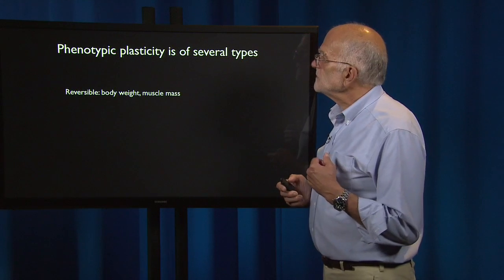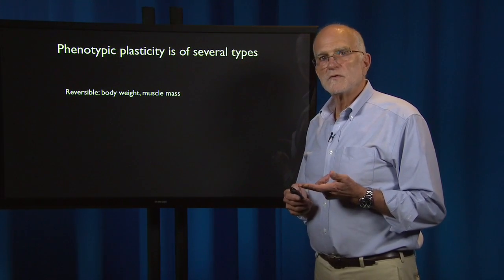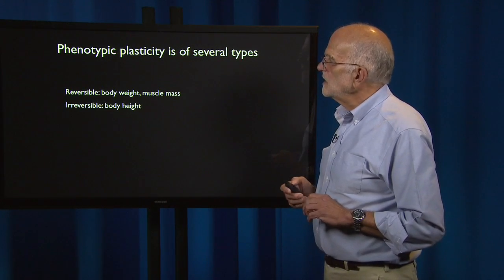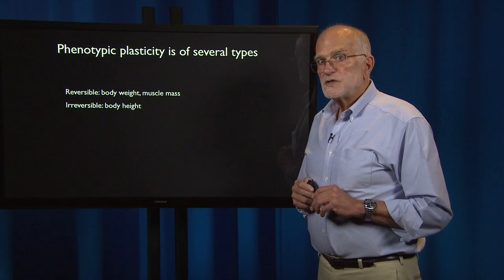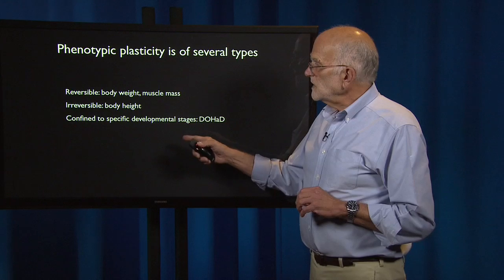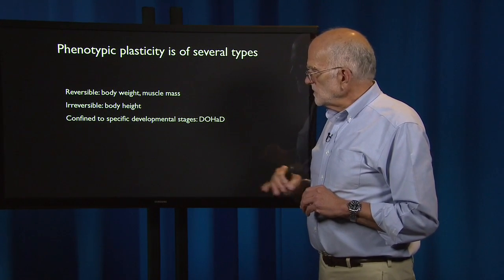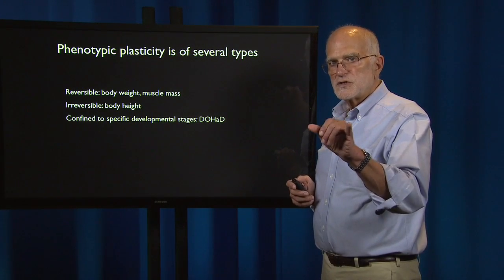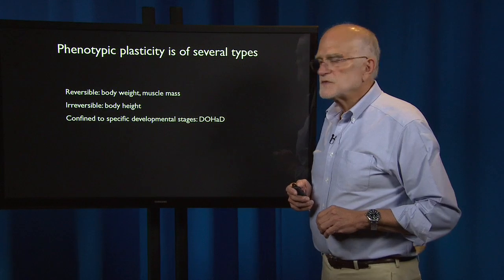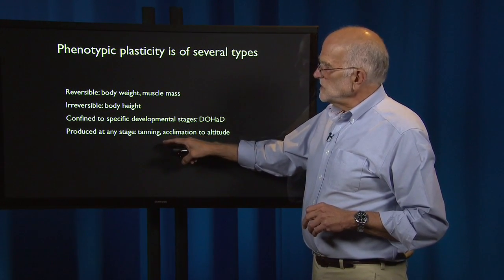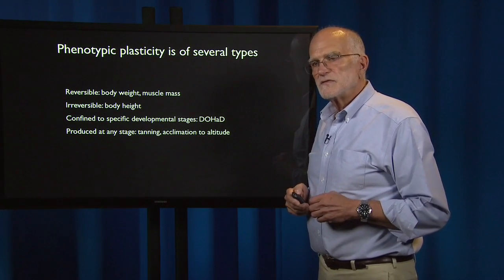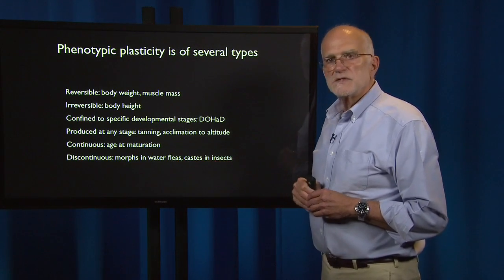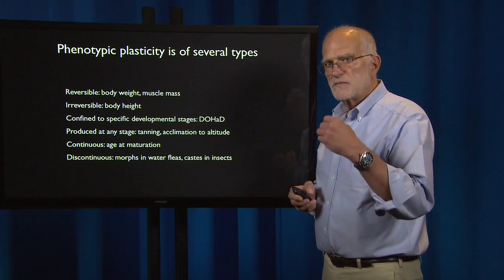Phenotypic plasticity can be of several types. It can be reversible — body weight and muscle mass are reversible; the Spitz twins probably could have reversed their appearances by switching regimes. It can be irreversible — body height does not change much after maturation. It can be confined to specific developmental stages: the DOHAD paradigm tells us that things happening in utero and in childhood are critical with knock-on consequences throughout life. Some plasticity, like tanning or acclimation to altitude, can occur at any stage. Some is continuous, like age at maturation, and some is discontinuous — morphs in water fleas, castes in insects — where morphologically distinct forms are produced by the same genotype.